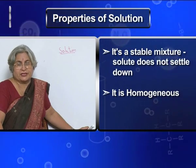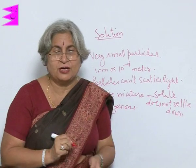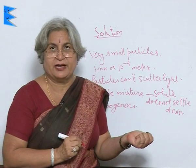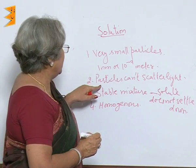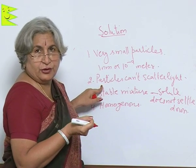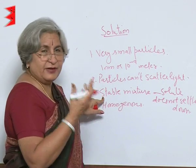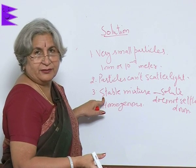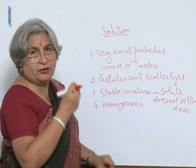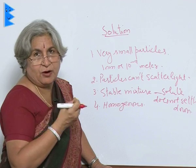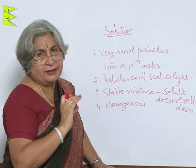Another feature of a solution is that it cannot be filtered. When you dissolve sugar, salt, or copper sulfate — as in the first beaker — you could not see the particles, they could not scatter light when you threw a beam of light through a torch, and nothing settled down. Sugar did not settle, and it was homogeneous — uniformly distributed. You can taste water from any side, top, bottom, or middle, and it will equally taste sweet. That means it has been uniformly distributed.